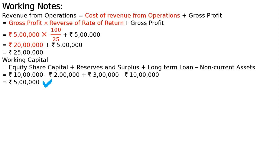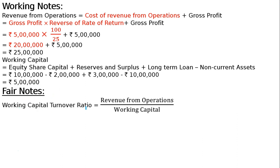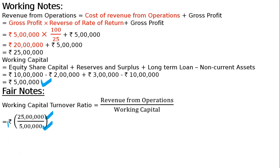Working Capital Turnover Ratio equals Sales divided by Working Capital. So in the working notes, Working Capital Turnover Ratio equals Revenue from Operations upon Working Capital. Numerator is Sales of 25 lakh, and Working Capital is 5 lakh. Dividing gives us 5 times.